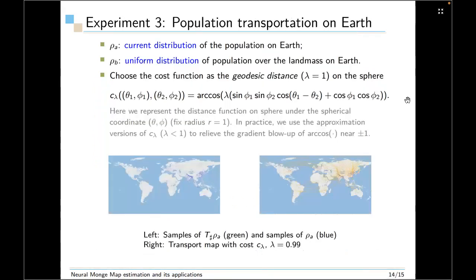Finally, we present an application about population transportation on Earth. For this one, the source distribution is the current distribution of population on Earth, and we choose the cost function as a geodesic distance on a sphere. But in practice, we choose λ to be less than 1 to avoid the gradient blow up of arc cosine near plus 1 and minus 1. So for the left figure, we plot the push forward distribution t push forward ρ_A and the samples of source distributions in blue. And on the right hand side, we plot a transport map with cost c_λ.